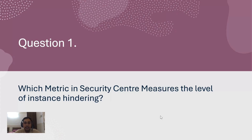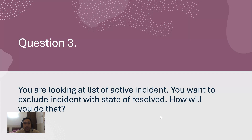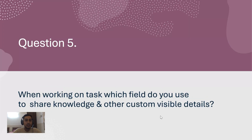Question 1: Which metrics and security center measures the level of instances entering? Question 2: What encryption feature is included in ServiceNow by default? Question 3: You are looking at a list of active incidents and want to exclude incidents with a state of 'resolved' — how will you do that? Question 4: Which term best describes something that is created, has work performed upon it, and is eventually moved to a state of closed? Question 5: When working on a task, which field do you use to share knowledge and other custom visible details?